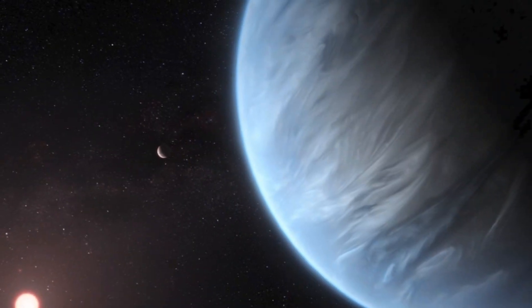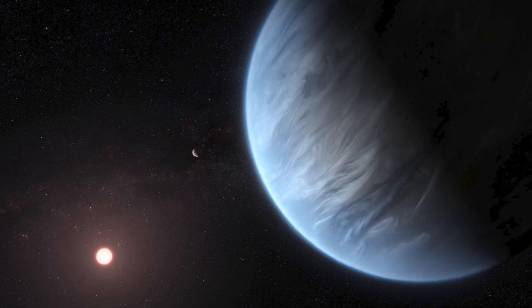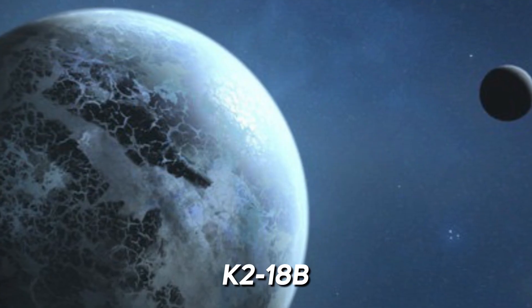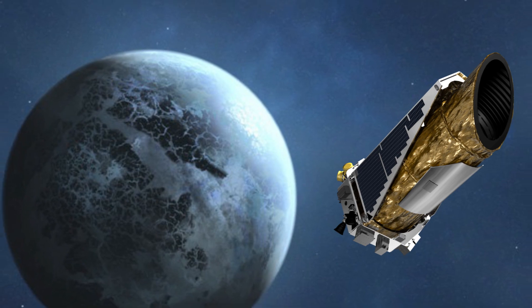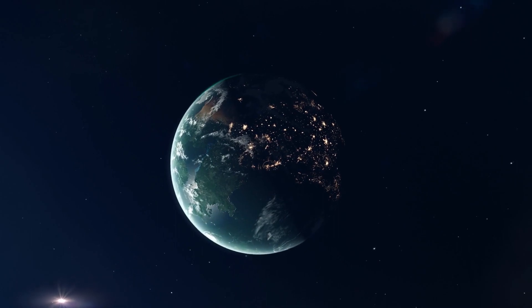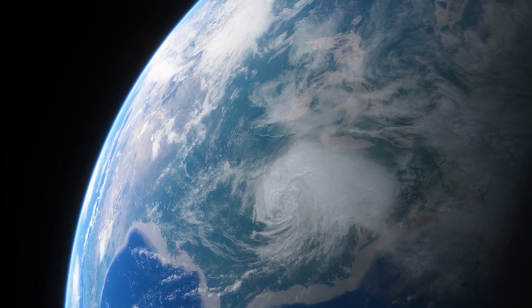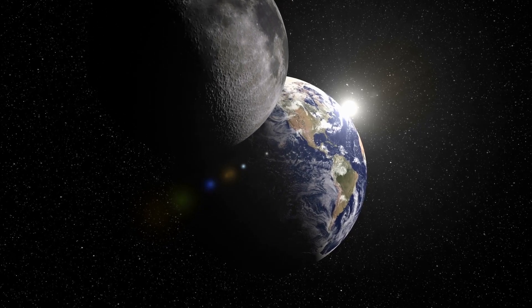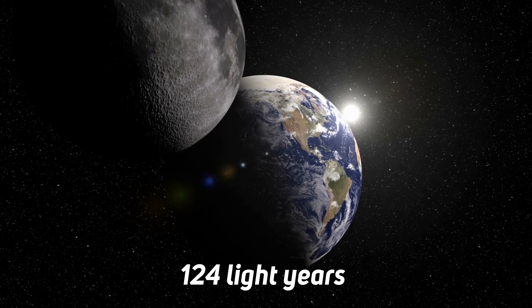One such exoplanet which generated a lot of buzz within astronomers and astrophysicists was K2-18b. This exoplanet was first located by Kepler telescope in September 2019. Initial findings formulated by two scientific teams showed that there were signs of liquid water in the planet's atmosphere. The planet K2-18b was located at a distance of 124 light-years away from Earth.